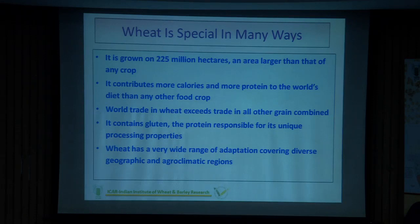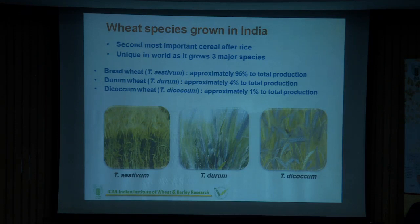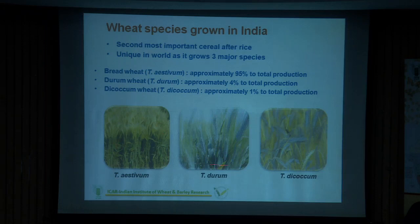In India, we have three different species that are grown: Triticum aestivum, durum, and dicoccum. India is the only country which commercially cultivates all three species at farmer fields. Triticum aestivum accounts for around 95 percent of cultivation.